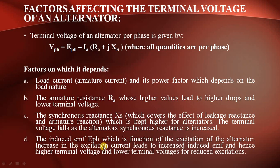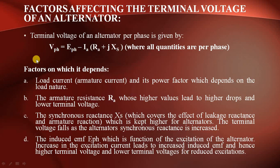When excitation current is increased, there will be an increase in induced EMF and a higher terminal voltage. Conversely, there will be a lower terminal voltage for reduced excitation. This is the fourth factor affecting terminal voltage.